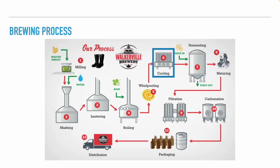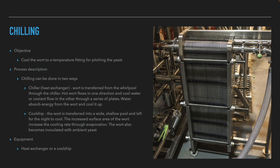From the whirlpool, the wort is transferred to the chiller to cool from near-boiling temperatures down to fermentation temperatures. The objective is to get the wort down to yeast pitching temperatures as fast as possible. This can be achieved by two main ways. The first is using a heat exchanger, where the wort moves from the whirlpool through the chiller — hot wort flows in one direction while cool water or coolant flows in the other direction through a series of plates or tubing, absorbing the energy from the wort and cooling it.